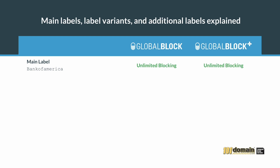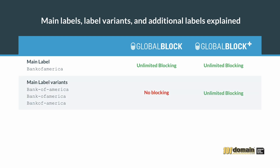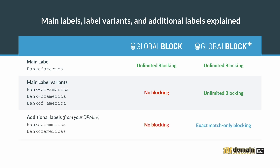Your main label variants would include hyphenated forms such as Bank-of-America. A valuable added benefit for existing DPML Plus blockholders is that you also get the blocking of the exact match of your additional labels. Additional labels from your DPML Plus accommodate plurals, specific misspellings, or trademark contains terms. For Bank of America, these could have been Banks of America or Bank of Americas. Already owning a DPML Plus with additional labels is the only way that these can be covered with GlobalBlock — this is strictly a grandfathering feature.